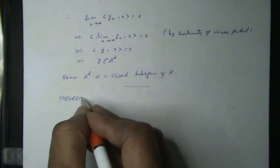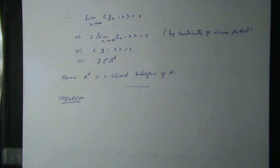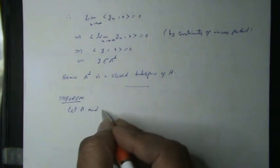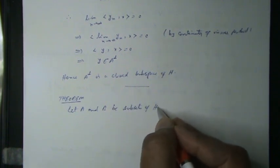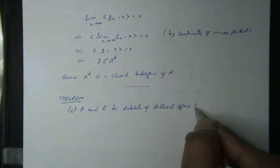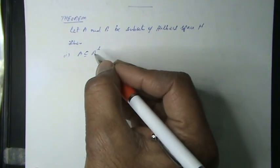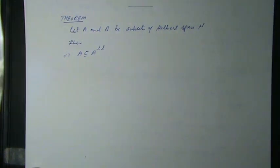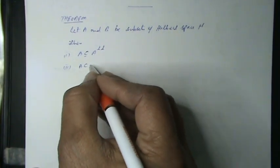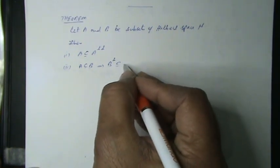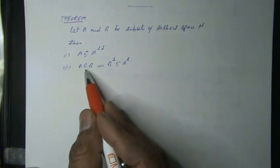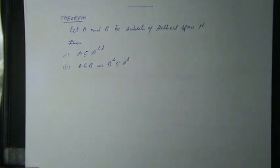Theorem: Let A and B be subsets of Hilbert space H. Then: First, A is a subset of A⊥⊥ (the double annihilator of A). Second, if A is a subset of B, then B⊥ is a subset of A⊥ — that is, the inclusion sign reverses.